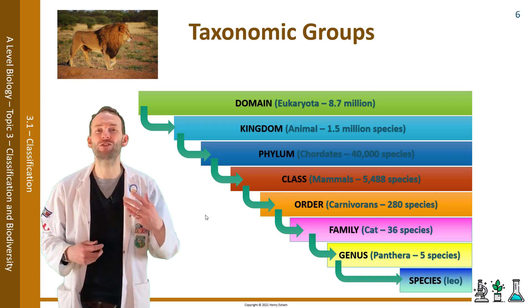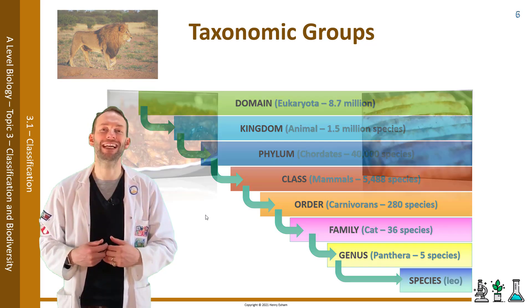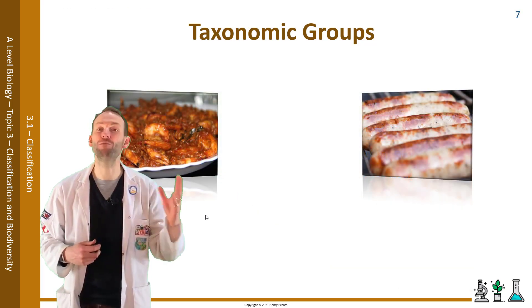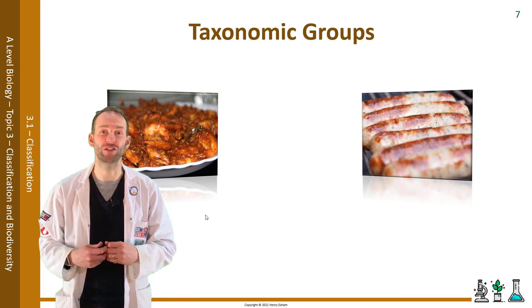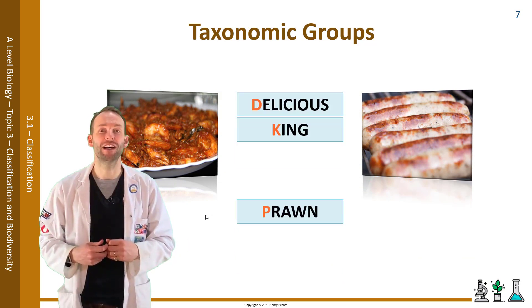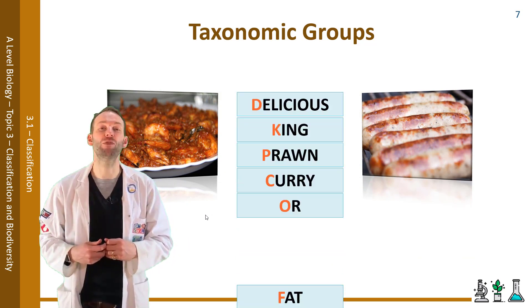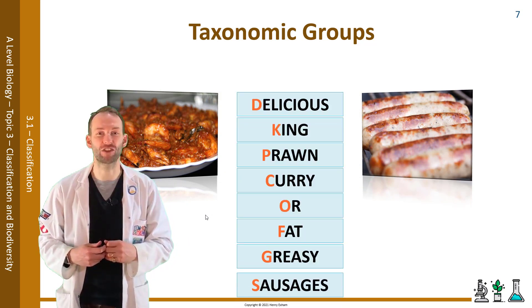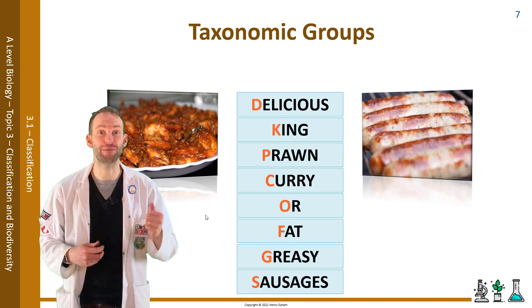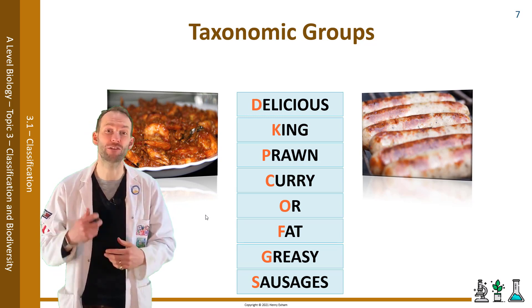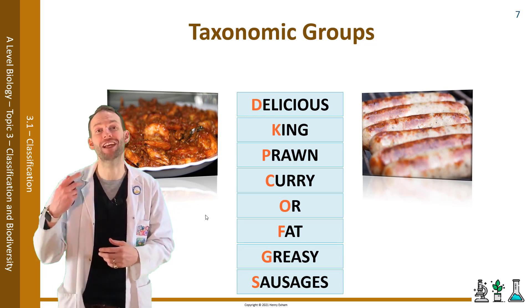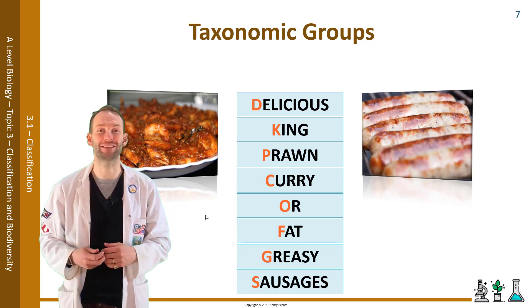This is how to remember the different taxonomic groups. My mnemonic for remembering those groups is: 'Delicious king prawn curry or fat greasy sausages,' which stands for domain, kingdom, phylum, class, order, family, genus, species.